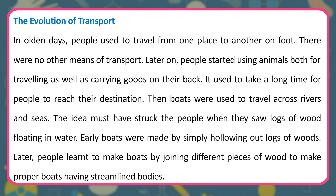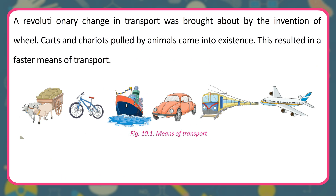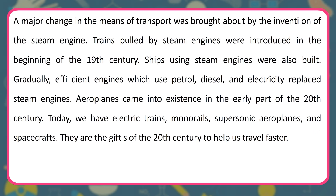Early boats were made by simply hollowing out logs of wood. Later, people learned to make boats by joining different pieces of wood to make proper boats having streamlined bodies. A revolutionary change in transport was brought about by the invention of a wheel. Carts and chariots pulled by animals came into existence, resulting in a faster means of transport. A major change was brought about by the invention of the steam engine. Trains pulled by steam engines were introduced in the beginning of the 19th century. Ships using steam engines were also built.